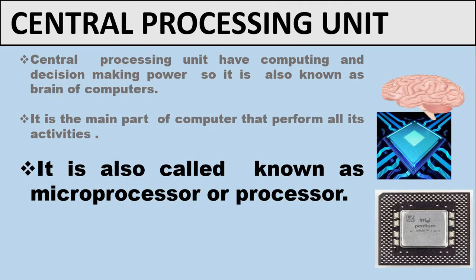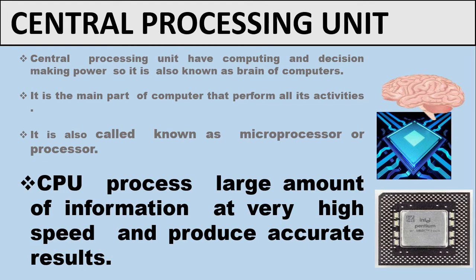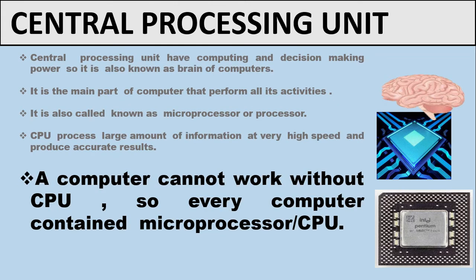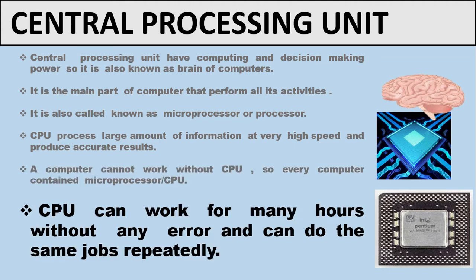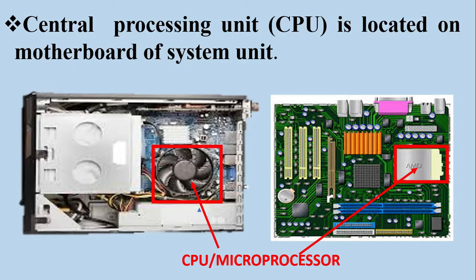CPU is also known as microprocessor or processor. It processes large amounts of information at very high speed and produces accurate results. A computer cannot work without a CPU, so every computer contains a microprocessor. CPU can work for many hours without any error and can do the same job repeatedly. The central processing unit is located on the motherboard of the system unit, highlighted by a red square.